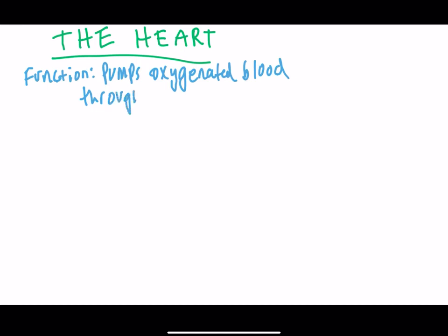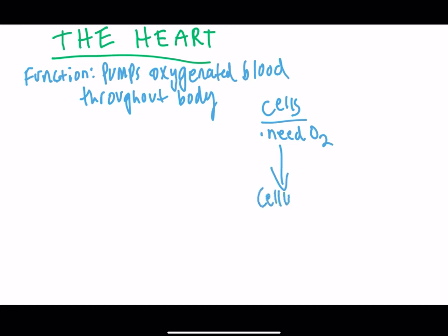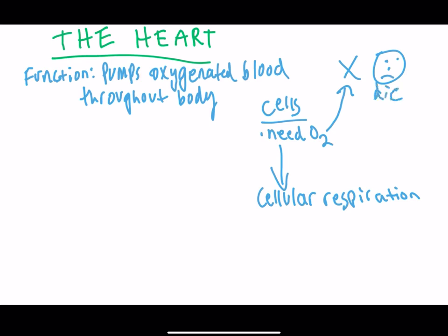Without oxygen, our cells would start to die. Our cells constantly need oxygen to perform cellular respiration so they can get the energy they need in order to function. Without the right amount of oxygen, our cells would start to die. Thankfully, our heart and lungs work together to constantly supply our cells with the oxygen they need in order for them to survive.